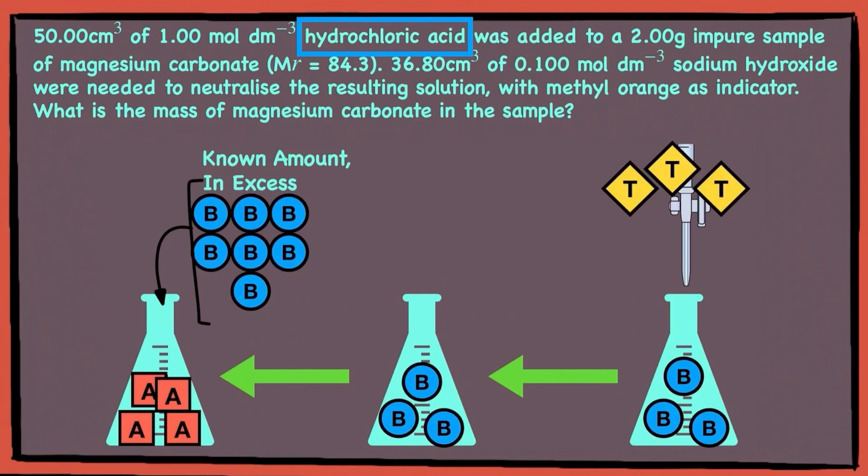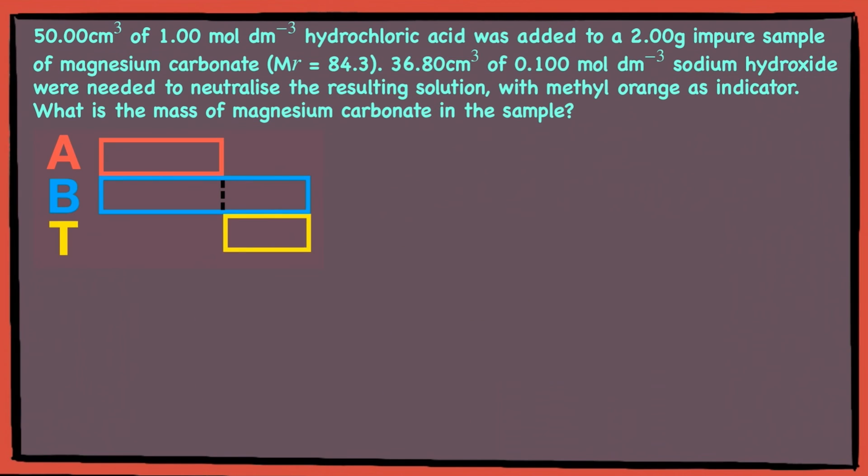Then the question goes on to say that sodium hydroxide was needed to neutralize the resulting solution. So this makes sodium hydroxide the titrant. And magnesium carbonate will be the A, which is what we're looking for. So let's use the model method to solve this question.